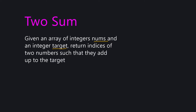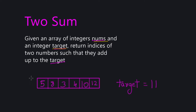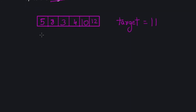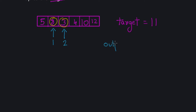Let me give you an example of what this means. Here we have an array and our target value is 11. To solve the Two Sum problem, we would have to pick 8 and 3 because 8 and 3 add up to 11. Once we pick that, we return their indices. The index for 8 is 1 and the index for 3 is 2, so the output would be [1, 2].